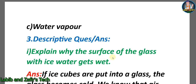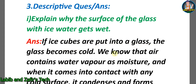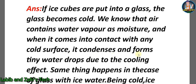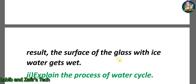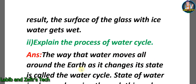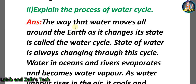Descriptive question one: Explain why the surface of a glass with ice water gets wet. Answer: If ice cubes are put into a glass, the glass becomes cold. Air condenses water vapor as moisture, and when it comes into contact with any cold surface it condenses and forms tiny water drops. The glass surface becomes cold due to the ice, and water vapor forms water drops on contact with the glass. As a result, the surface of the glass with ice water gets wet.